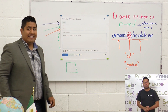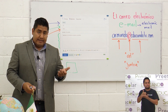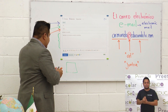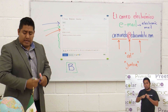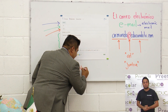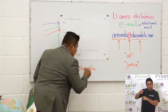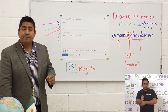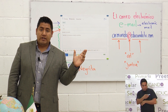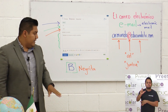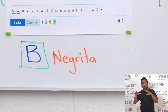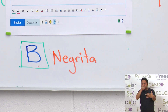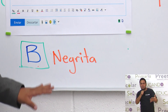El siguiente ícono importante es una B en negrita. Este ícono se llama 'negrita' y se refiere a un tipo de letra más gruesa. Cuando la utilizas, estás resaltando dicha información para indicar que es más importante, o para que el lector o receptor de la información ponga más atención exactamente en esa parte de la escritura.